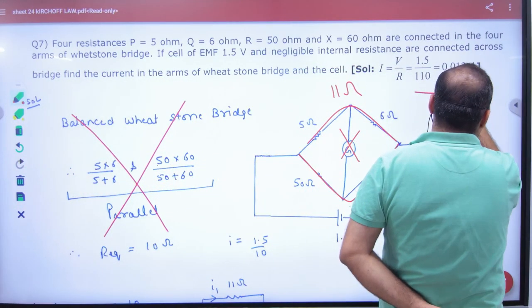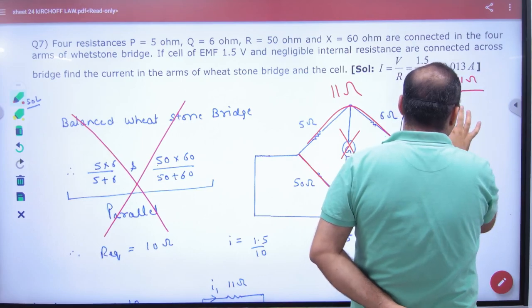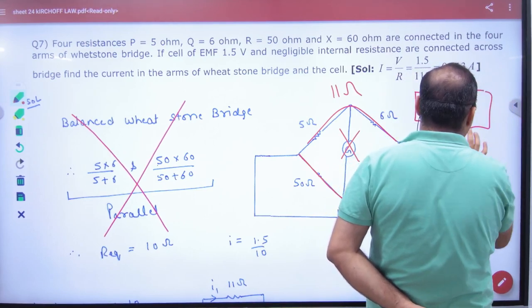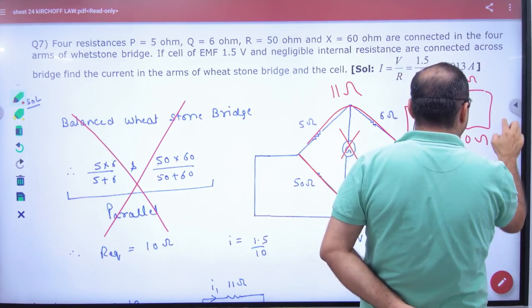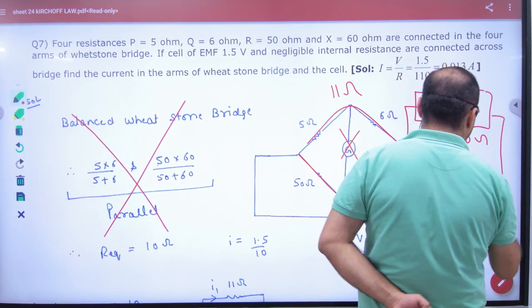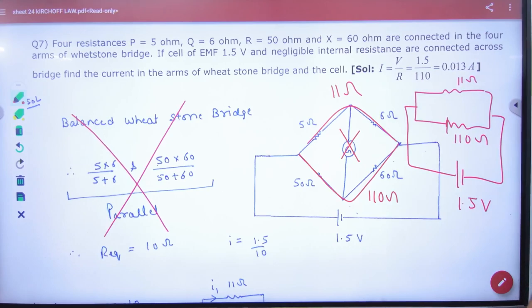So your new diagram will make this 11 ohm, this 110 ohm, and this one battery 1.5 volt battery. Okay? So what do you have to do?